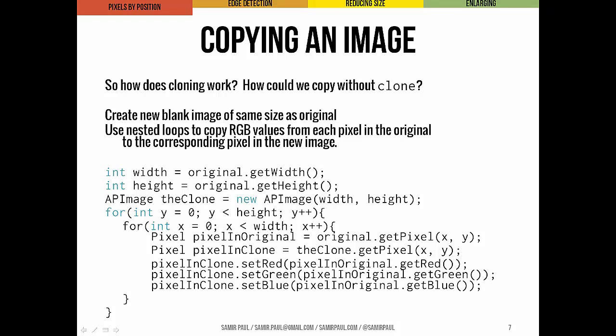This algorithm transfers the integer red, green, and blue values from the original image to the new image. We could take a simpler route of transferring pixel objects instead, but then the two images would share the same pixel objects — meaning one pixel object would have two names. If we changed the colors in one, that change would show up in the other image too, which is probably not what you want.